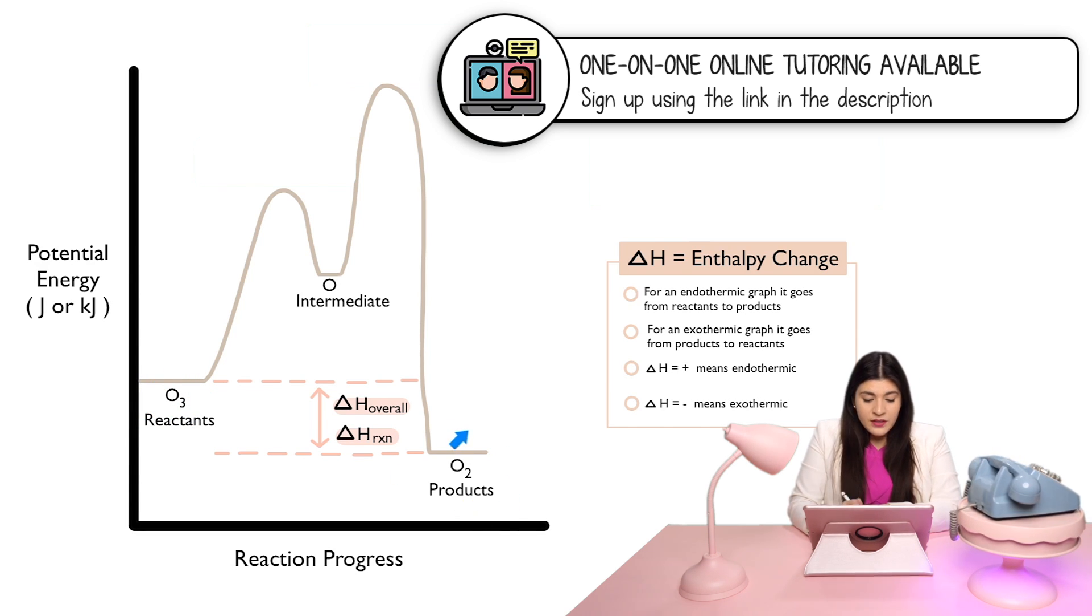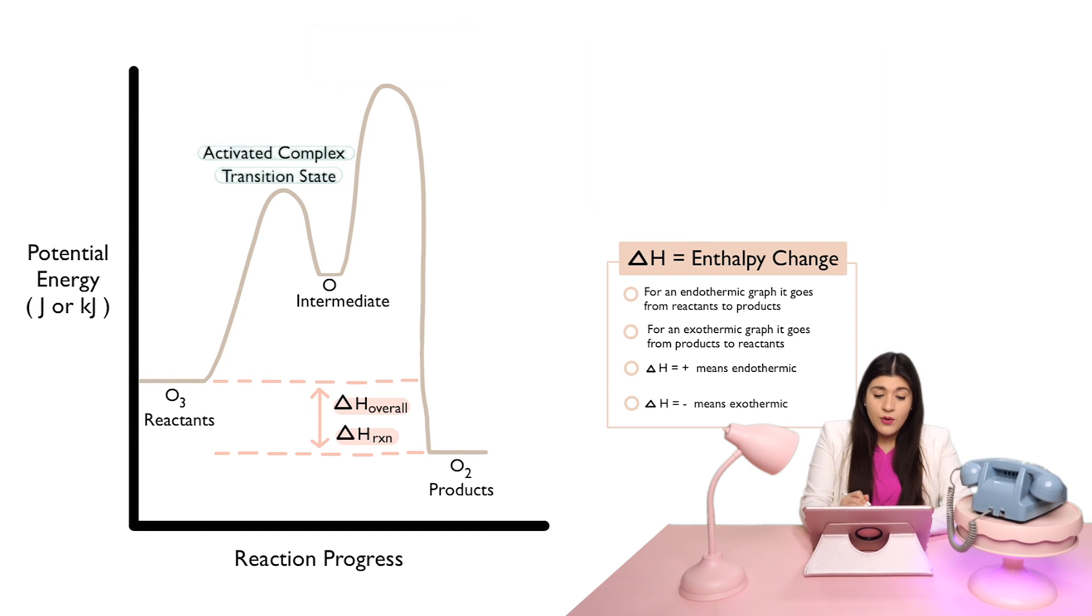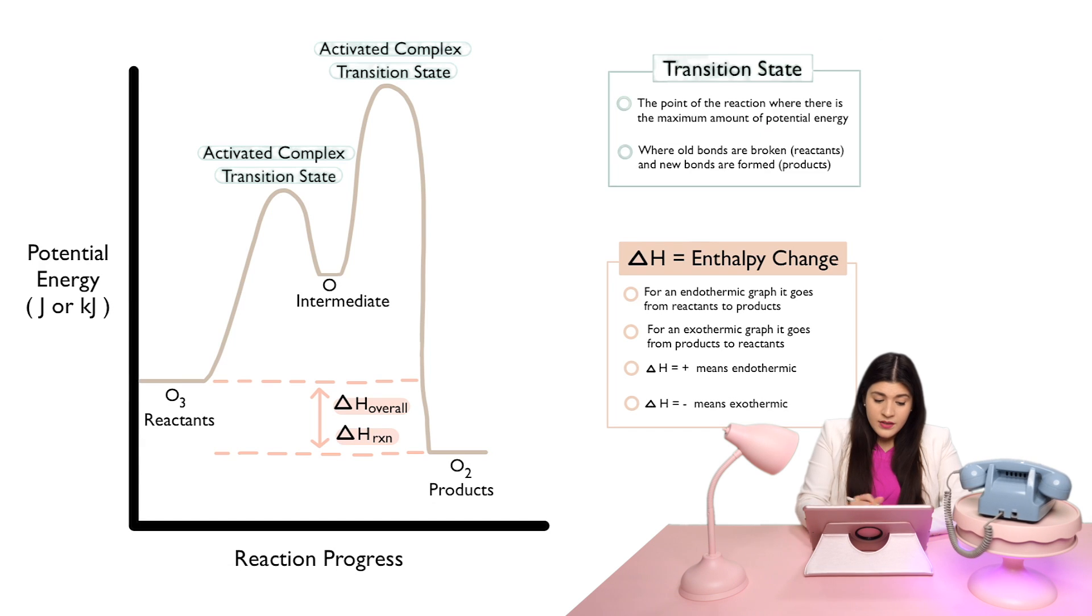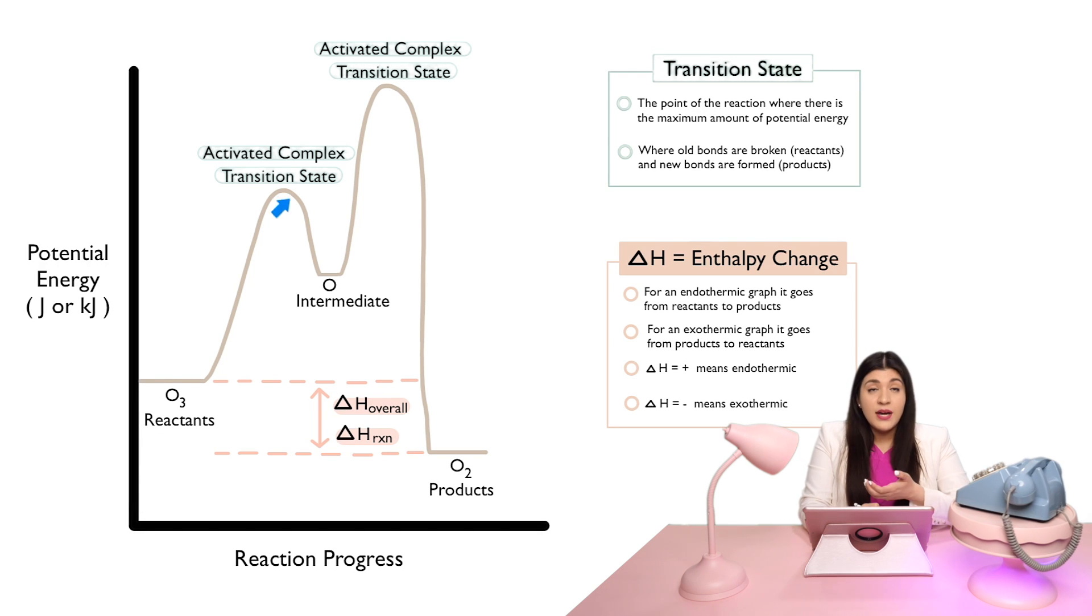The other thing that we were talking about was our transition state or activated complex. So, either name, I've seen either name for these. What is that? Well, it's the overall point of the reaction where we have the maximum amount of potential energy, which is why it's the highest points here. And in this case, we have two different transition states.